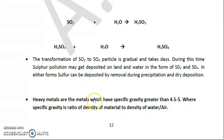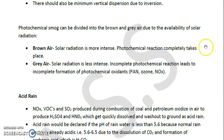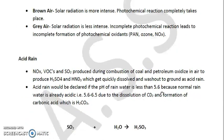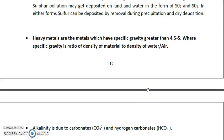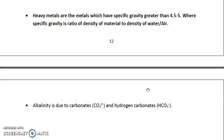Heavy metals are substances with a specific gravity greater than 4.5 to 5. Specific gravity is the density of the matter relative to the density of water or air. Also, the alkalinity of lake water bodies is due to HCO3⁻ (bicarbonate ion) and CO3²⁻ (carbonate ion).